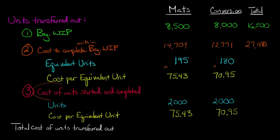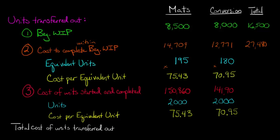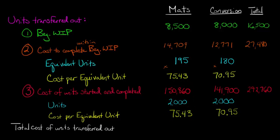Now we move on to the cost of units started and completed during the period — not leftover from the previous period, but completely started fresh and finished this period. We have 2,000 units started and finished, and we multiply by the cost per equivalent unit. That gives us $150,860 for direct materials and $141,900 for conversion costs. The $150,860 is just the 2,000 units times the cost per equivalent unit of $75.43.